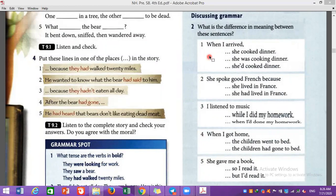What is the difference in meaning between these sentences? Look at number one. When I arrived she cooked dinner. When I arrived she was cooking dinner.